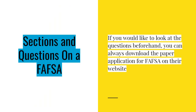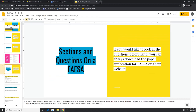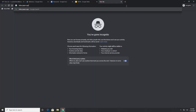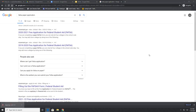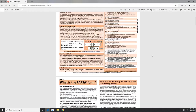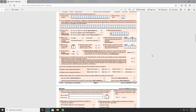Now we are going to discuss the sections and questions on a FAFSA application. If you would like to look at the questions beforehand, you can always download the paper application from their website. You can also Google 'FAFSA paper application' and find the PDF in the search results. You'll click on the one corresponding with the year that you would like to start school, and it should download on your computer. These are going to be all the same questions as the ones online.